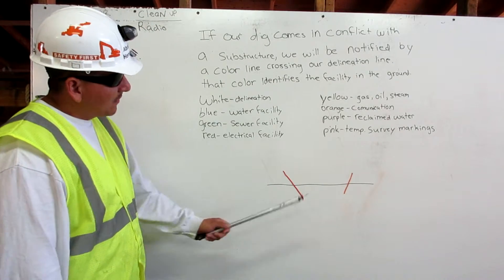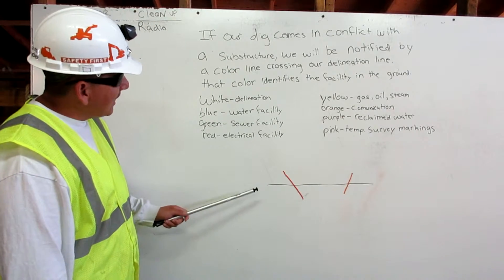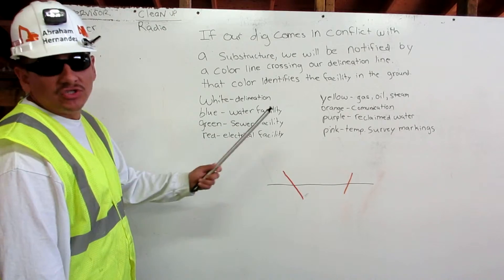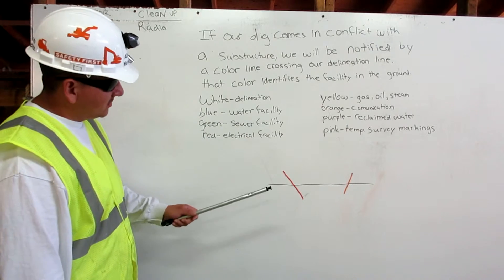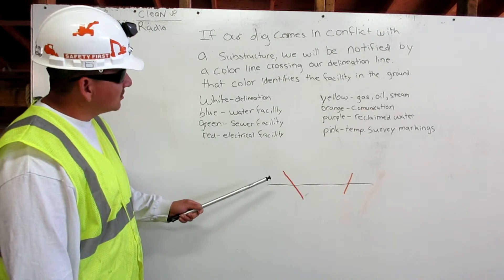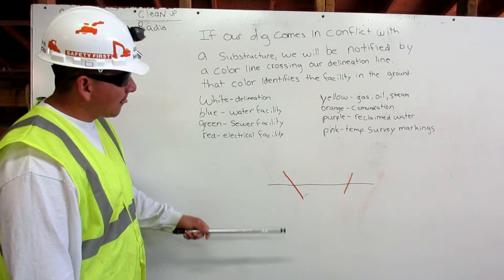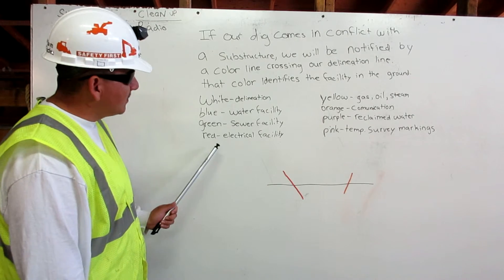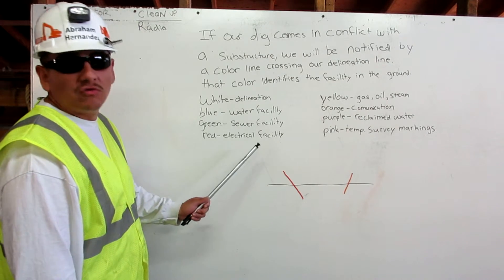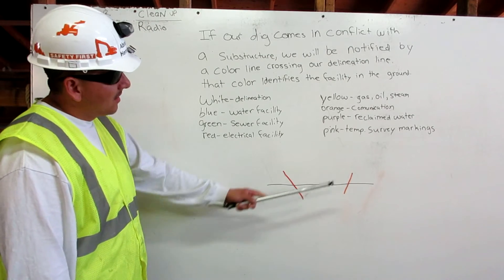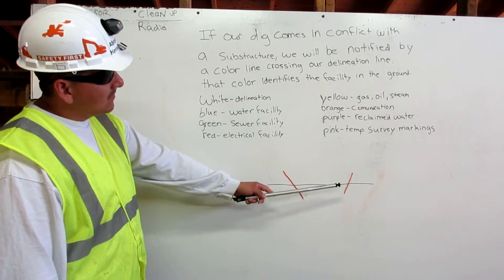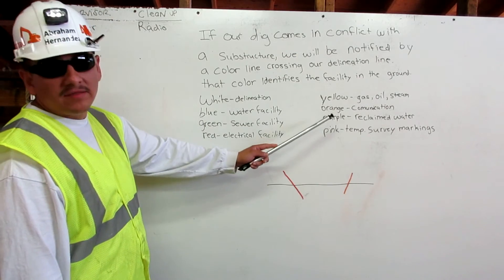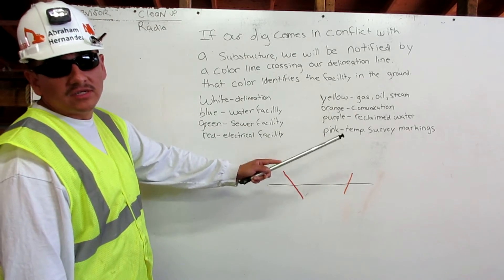Here is an example of that. I have a black line for my delineation line because we are using a whiteboard, but this black line is our delineation. Here I have a red line crossing — that means it is an electrical facility. And here I have an orange line crossing — that means it is a communication facility.